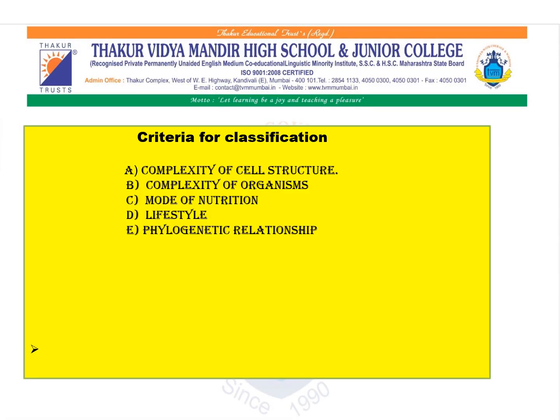The criteria for classification are: complexity of cell structure, which refers to prokaryotes and eukaryotes; and complexity of the organisms, which refers to unicellular or multicellular organisms. Next, mode of nutrition — there are generally three modes: autotrophic, saprotrophic, and heterotrophic.